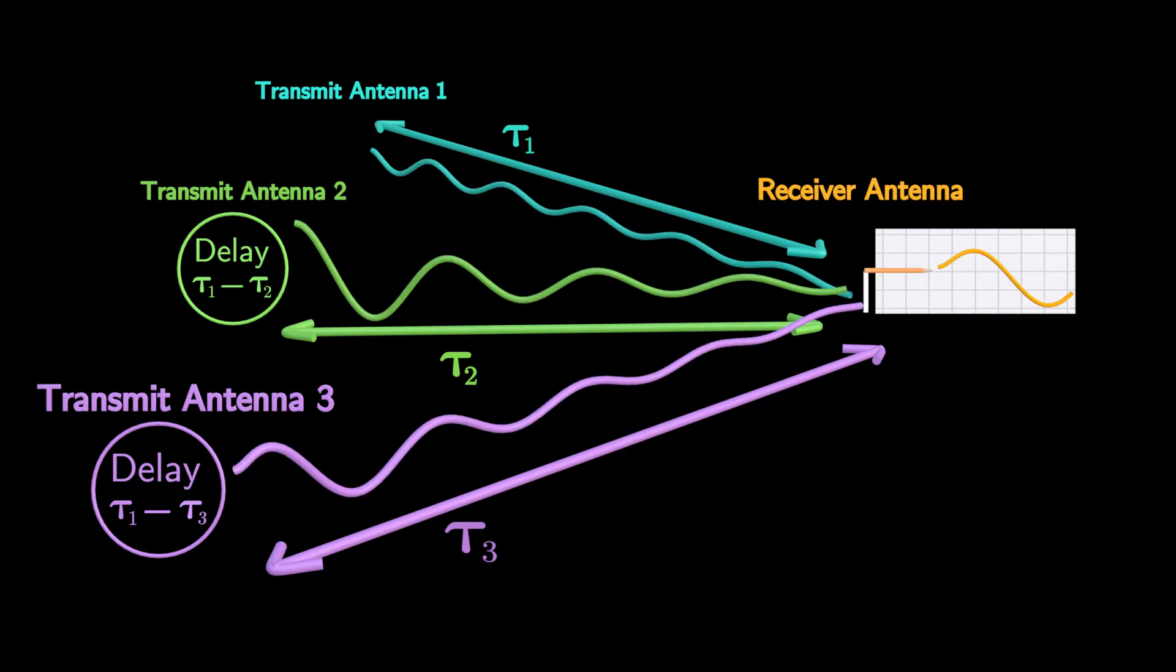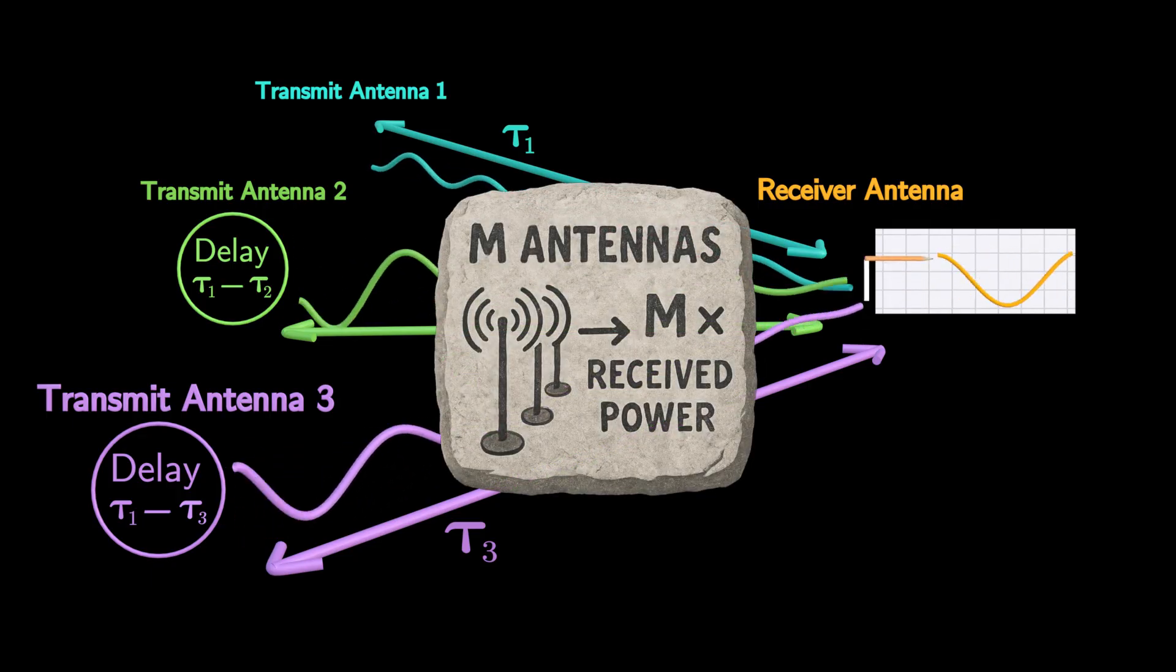In theory, using M antennas can increase received power by a factor of M.